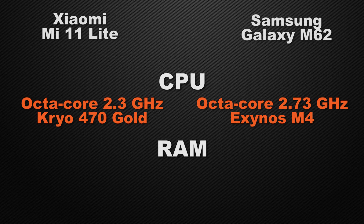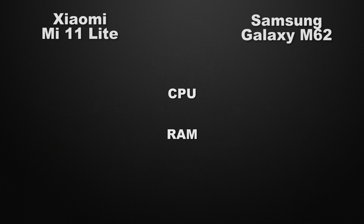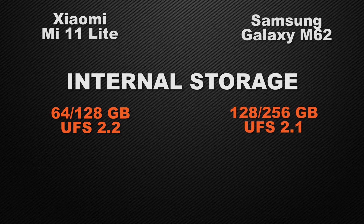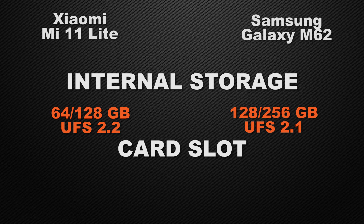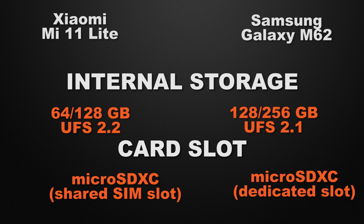For RAM, the 11 Lite has three options: 4, 6, and 8GB, whereas the M62 has only 8GB. So the winner here is the 11 Lite because it has multi-RAM options. For internal storage, the 11 Lite comes with 64GB and 128GB, whereas the M62 has 128GB and 256GB — so M62 wins with bigger storage options. For external storage, the 11 Lite has a shared card slot while the M62 has a dedicated card slot, so M62 wins.